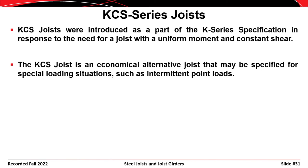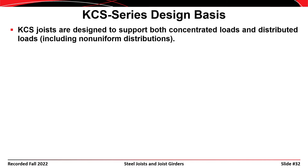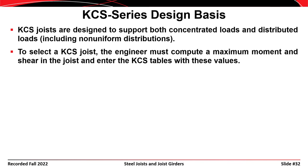KCS series joists are handled differently — they are used where you need a constant moment or constant shear, which happens when point loads rather than uniformly distributed loads act on the joist. To select a KCS joist, the engineer computes the maximum moment and shear in the joist and then goes into the tables to use those values, which is different from a K-series joist where you pick based on maximum uniformly distributed load.